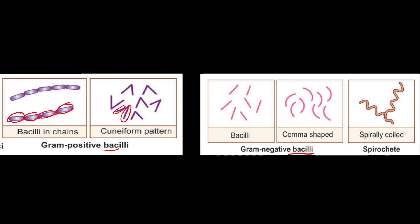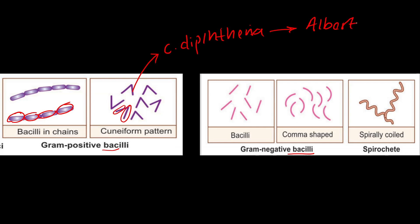For gram positive bacilli in chains, the example is Bacillus anthracis. For the cuneiform or Chinese letter arrangement, the answer is Corynebacterium diphtheriae. To observe metachromatic granules, the Albert stain is performed. Details on Albert stain, gram staining, and other staining methods are available in separate videos on the channel.